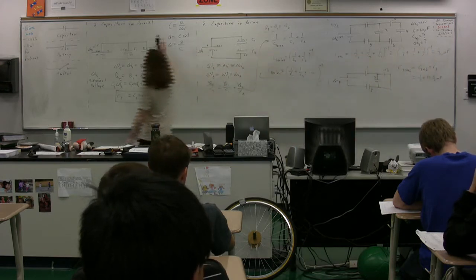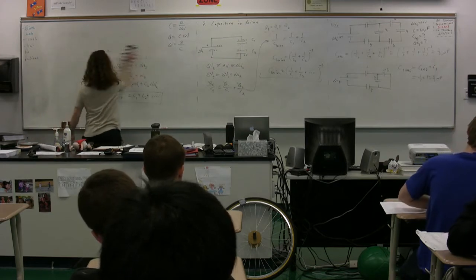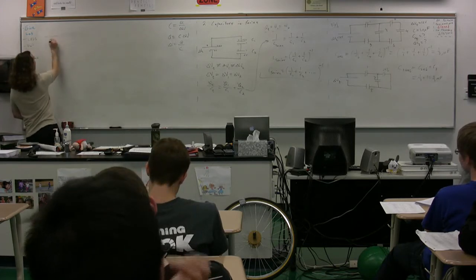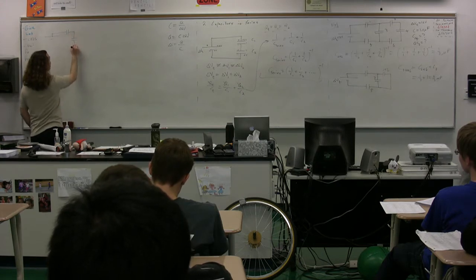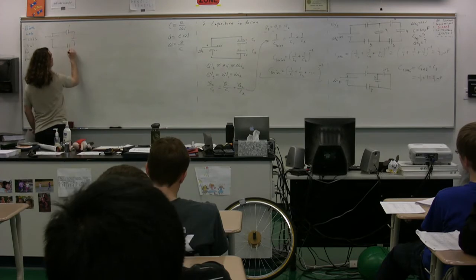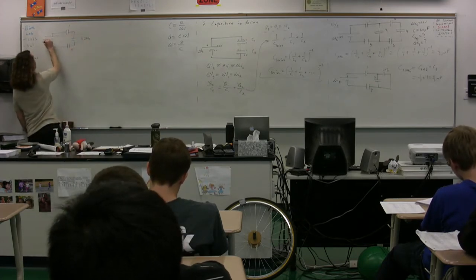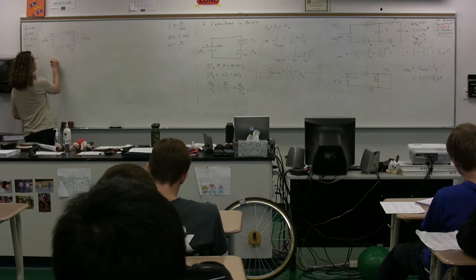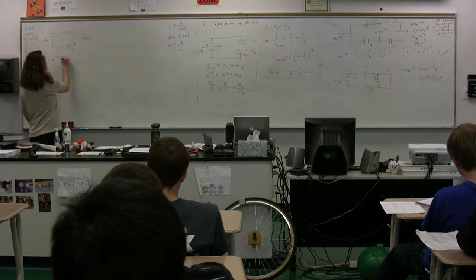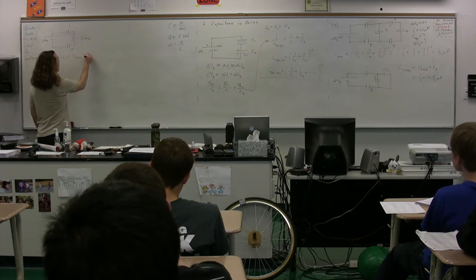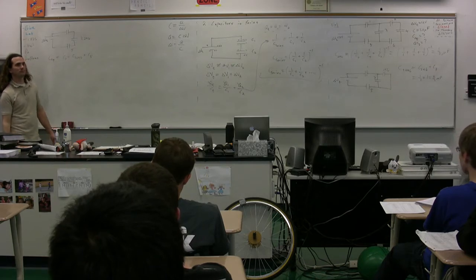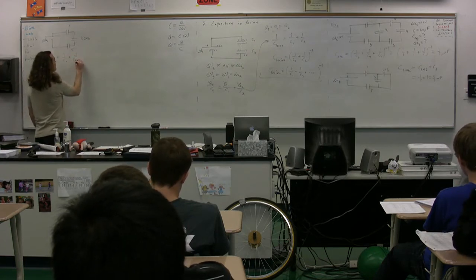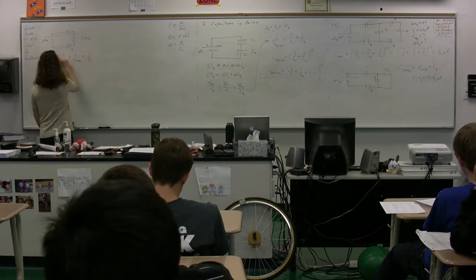Now we can redraw our circuit diagram again. We still have our battery, capacitor 1, and capacitor 5, and now we have the combined equivalent capacitor C3,246. The remaining ones — C1, C3246, and C5 — are all in series. So the equivalent capacitance for the whole thing equals 1 over C1 plus 1 over C3,246 plus 1 over C5, all to the negative 1 power: 1 over 1 plus 1 over 4 thirds plus 1 over 1.